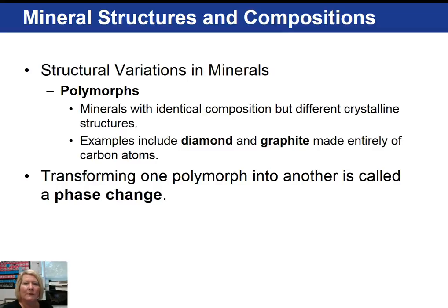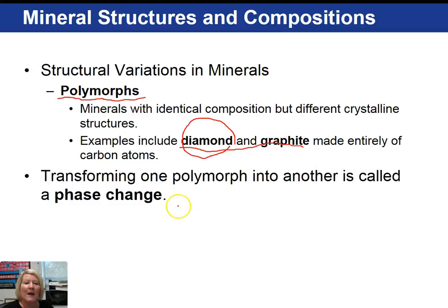Looking at some structural variations in minerals, let's talk about what a polymorph is. A polymorph is a mineral that has an identical composition with another mineral but arranges its atoms differently. A good example would be diamond and graphite — both are carbon. However, diamonds arrange their carbon atoms in a completely different fashion than graphite. Diamond is the form of carbon stable deep in the Earth, whereas graphite is the form stable near the Earth's surface. As one polymorph changes into another polymorph, we call that a phase change.